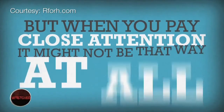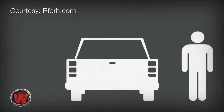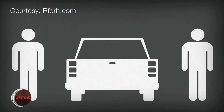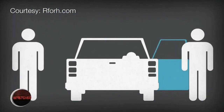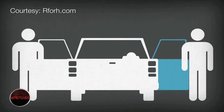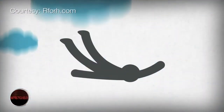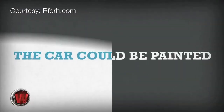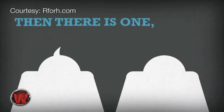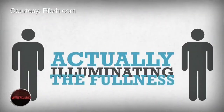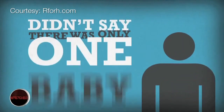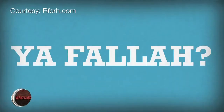Moving on to P for perspective. Sometimes the testimony of two people can seem contradictory, but when you pay close attention, it might not be that way at all. Quick example: say there's a car parked in the middle of the street. A person on the right says the car door is blue and there's a baby in the back, and the person on the other side says the car door is white and there are two babies. The car could be painted white on one side and blue on the other, and if there are two babies, then there is one, right? So both are actually illuminating the fullness of the scene. The guy on the right didn't say there was only one baby — he just mentioned one. You've got to pay attention to the language and perspective. Sometimes the whole truth is in the details.